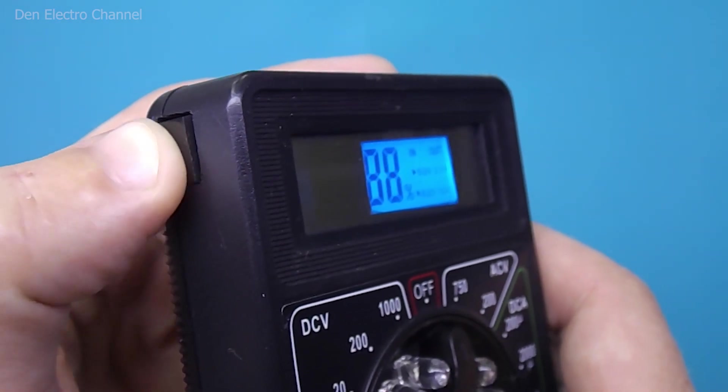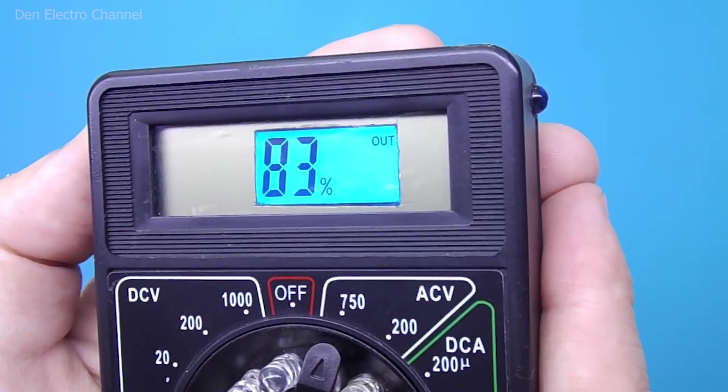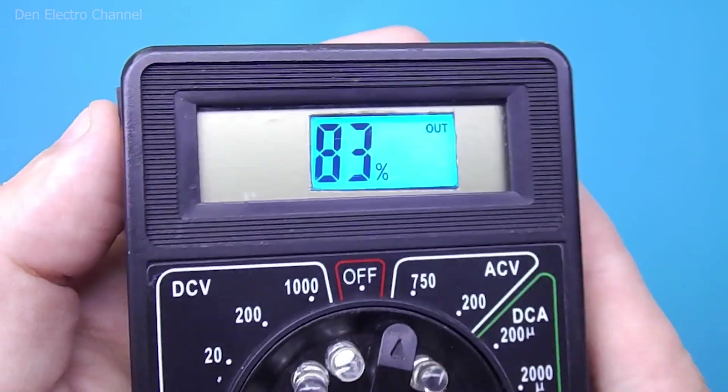To turn on the power bank, you need to hold down the side button. If you quickly click on it twice, the flashlight located on the other side turns on.